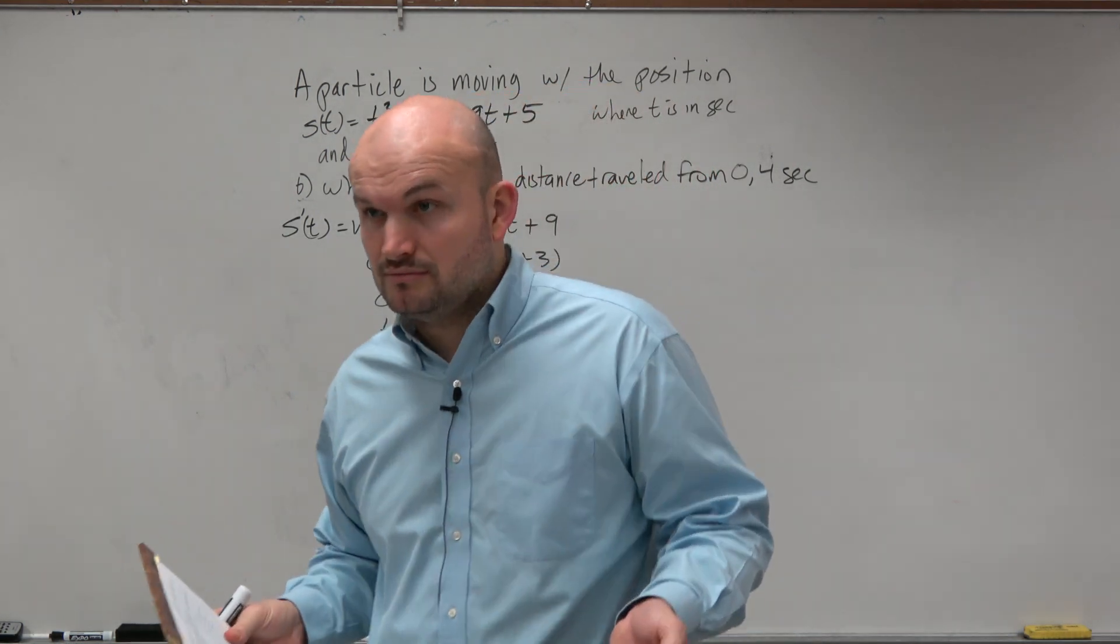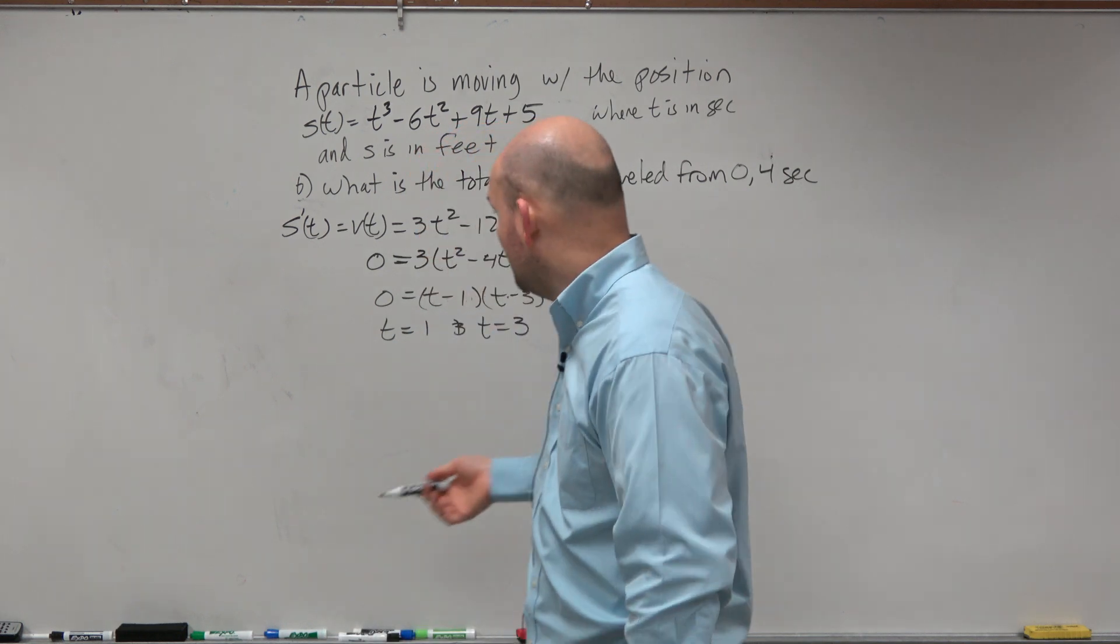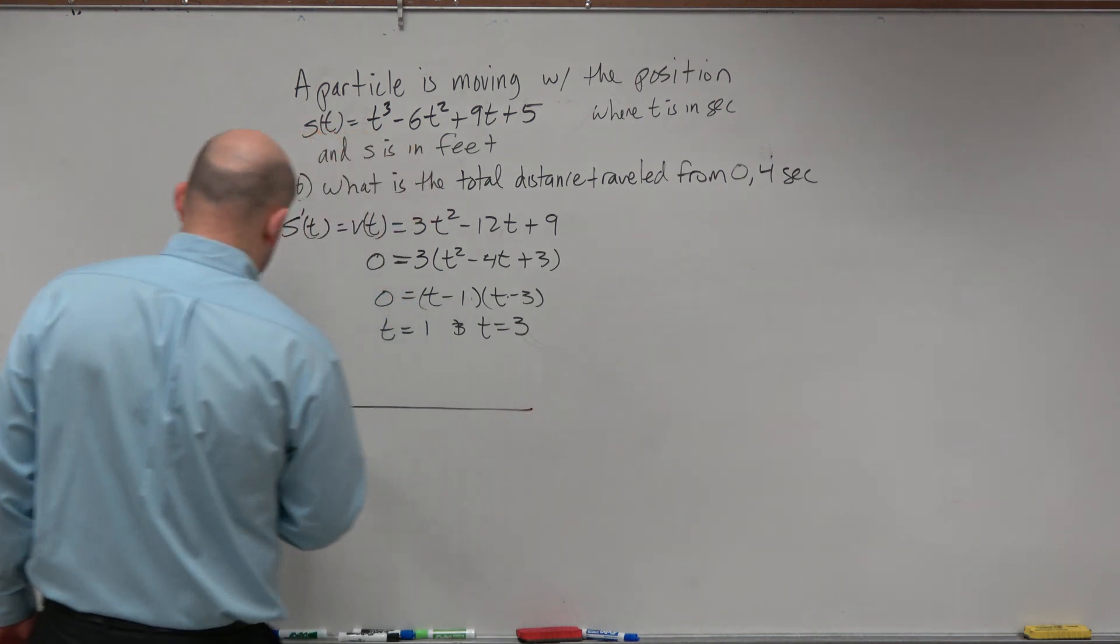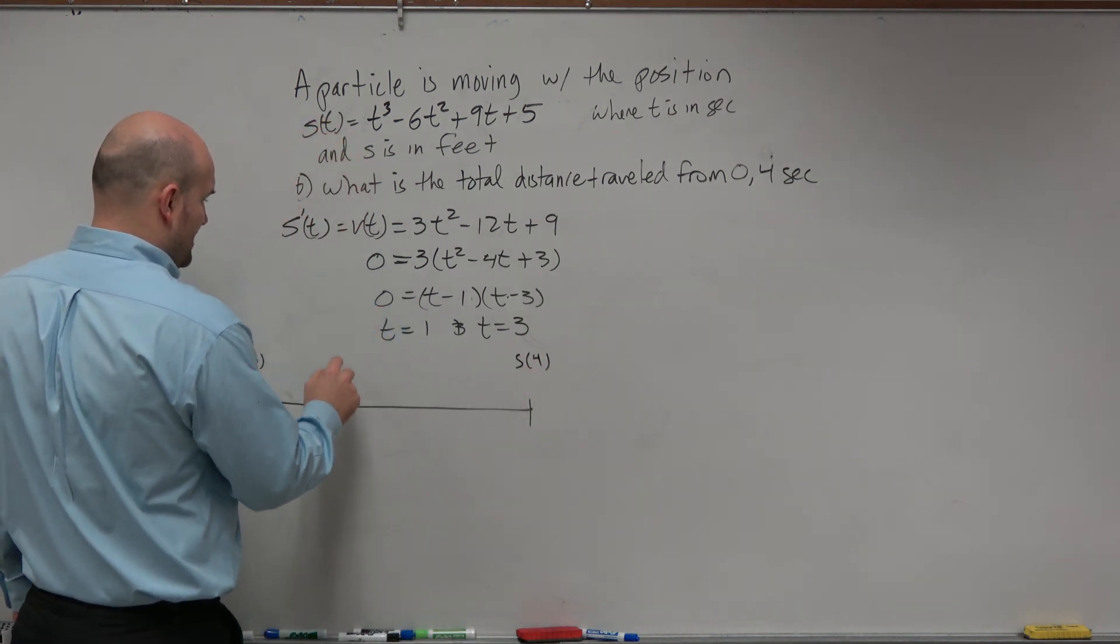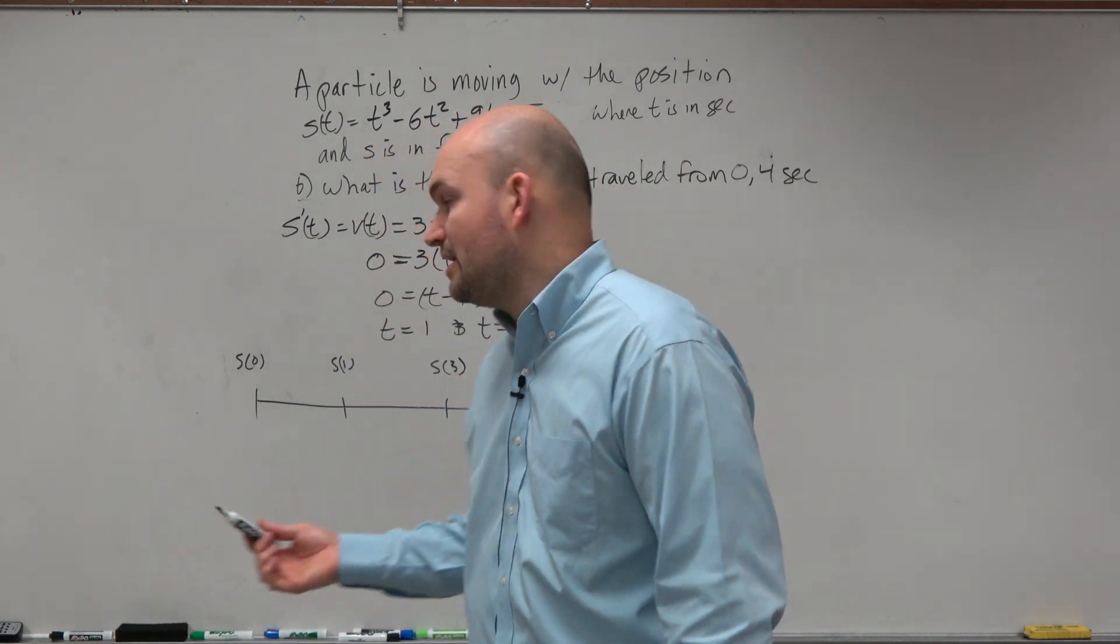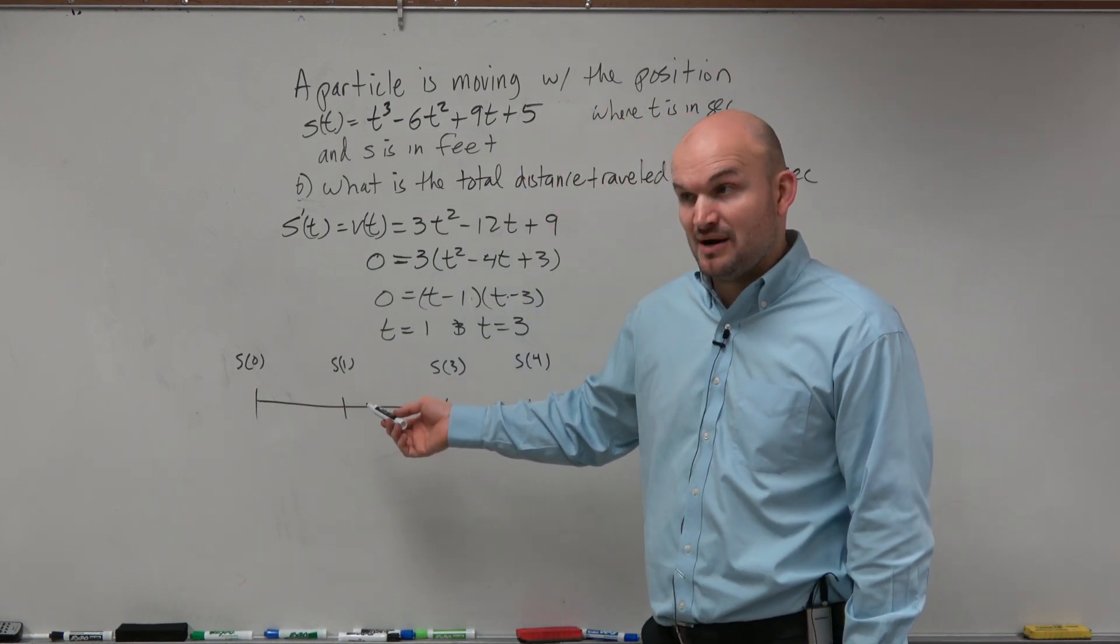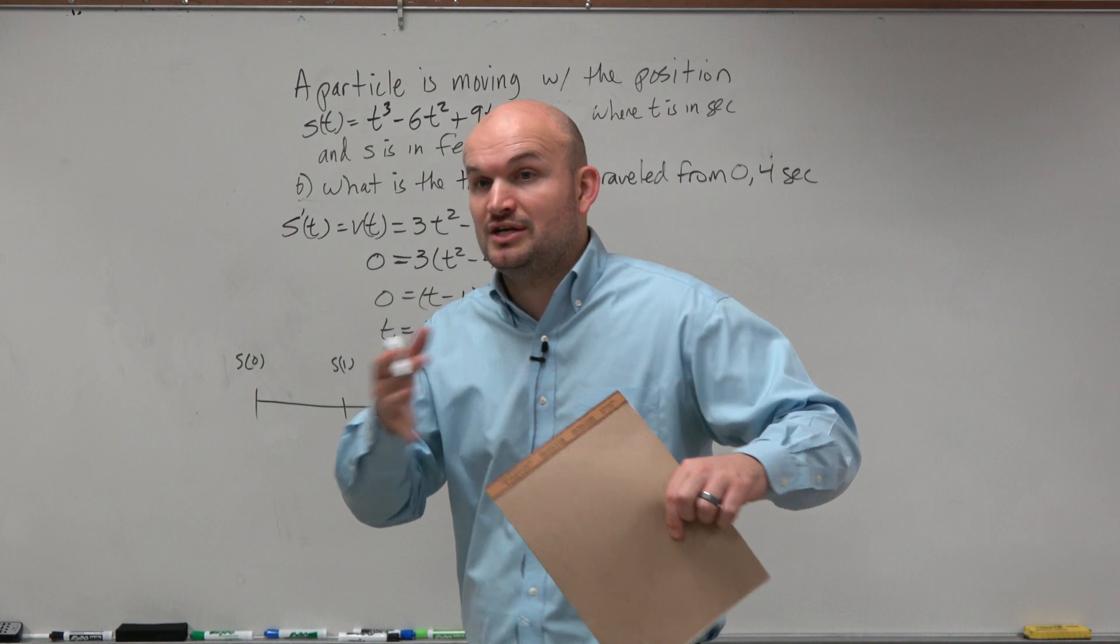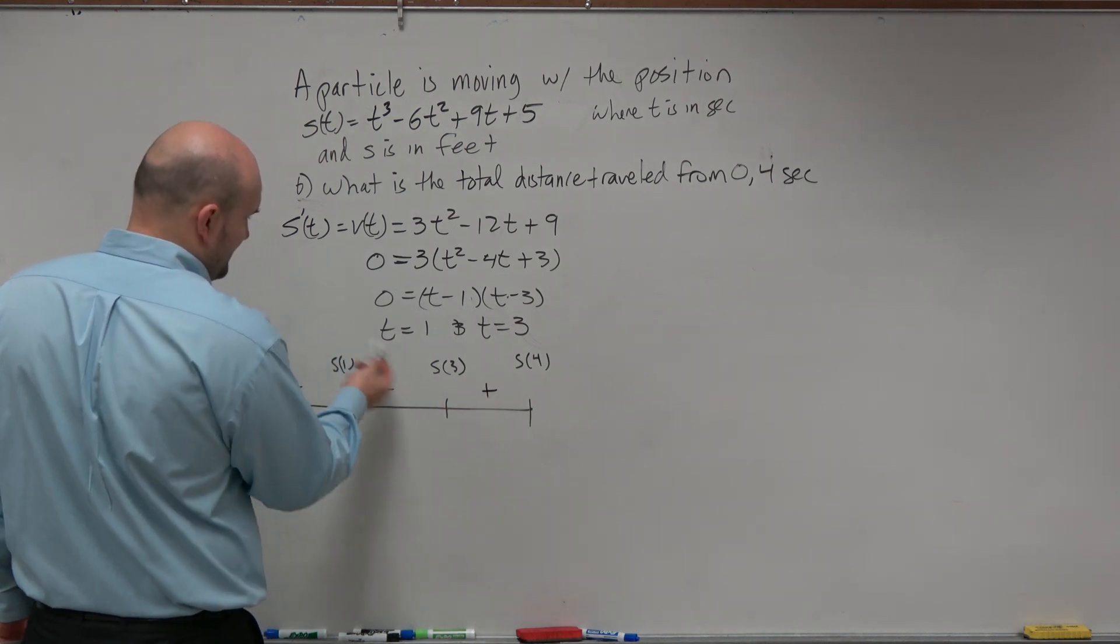We could justify that it's changing direction by actually plugging in a test point. We could plug in between 0, the initial point. If we draw a kind of number line here, we have s(0), which is the beginning, s(4), which is the end, then we have s(1) and s(3). We could plug in points like s(1/2) to determine if the velocity is positive or negative, plug in s(2) to determine if it's positive or negative, and s(3.5). That's just to verify if it's changing direction at those points. That's going to be positive to negative and then back to positive if you were to plug those in.